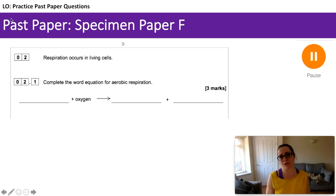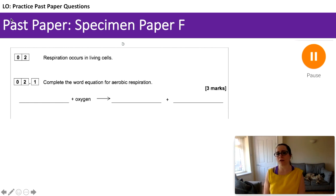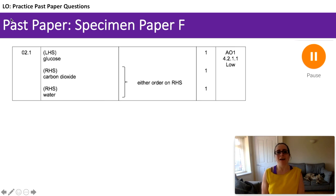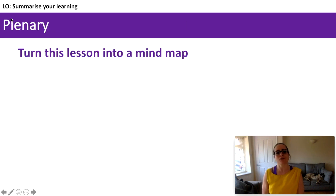We are onto a foundation question, but this question could appear on the higher paper with less scaffolding — you would just need to write it rather than fill in the gaps. Complete the word equation for aerobic respiration: blank plus oxygen makes blank plus blank. On the left hand side we've got glucose plus oxygen. The right hand side: carbon dioxide plus water. You can have it in either order — you will still get the marks.